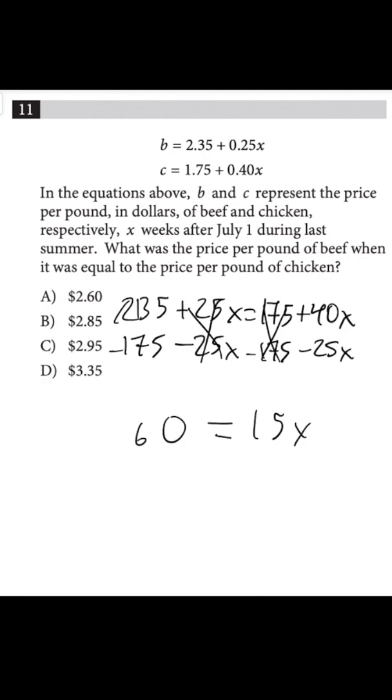15x equals 60, so x is going to be 4 after dividing by 15 on both sides. Now I just have to plug this 4 back into one of these equations. It doesn't matter which one. I'm going to pick b because I know that 0.25 times 4 equals 1, and then plus 2.35.